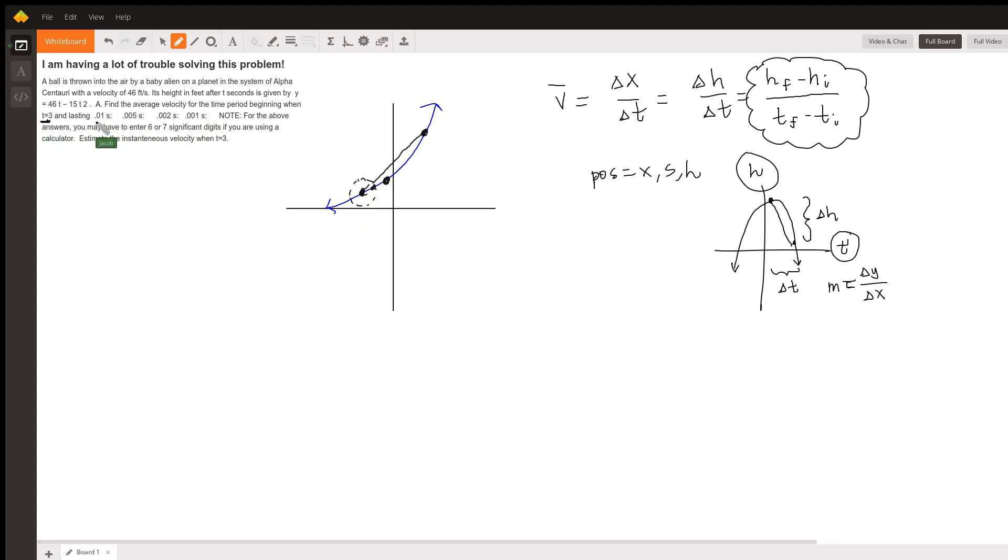That's what this question is getting at. If we start at t equals 3 and I go from t equals 3 to a point that's 0.01 later, that's pretty close. If it's 0.005 later, it's even closer, and so on throughout the remainder of the question. What you want to do is simply find average velocity—that's change in height over change of t for each of those given values.